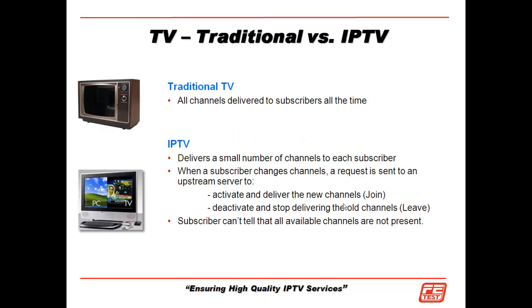If we look at traditional TV versus IPTV, with traditional TV all the channels are delivered to the subscriber all the time. So if you had 300 channels on your cable TV, all of them are available to that TV set. With IPTV, we're just going to deliver a small number of channels to each subscriber — the channels they're interested in. If a customer wants to leave a particular channel, they have to request to deactivate and leave, then switch to a new channel by activating and joining that new channel.